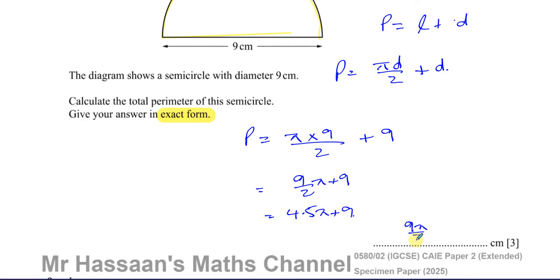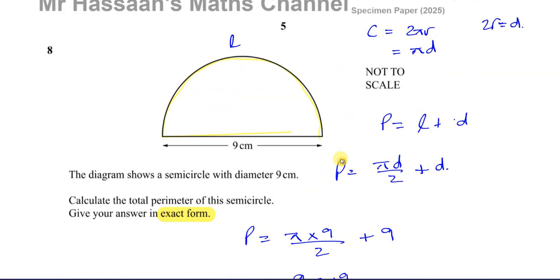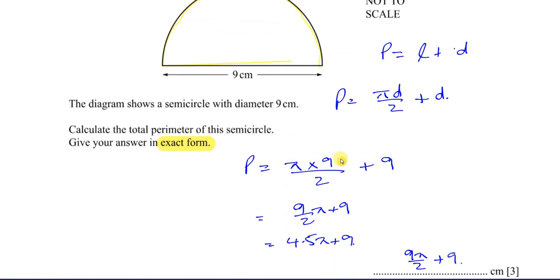I think I'll stick to 9π over 2 plus 9. That's the answer in exact form. That's the perimeter of this semicircle. So that's the answer to part A, pretty simple.